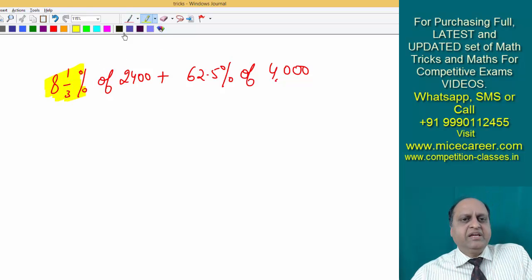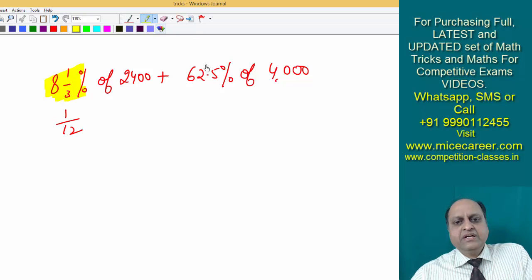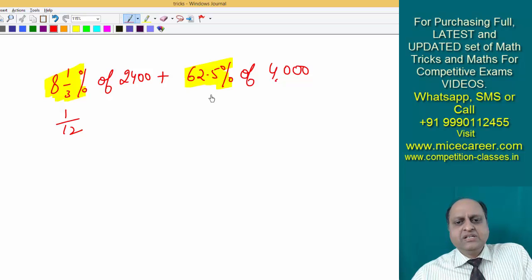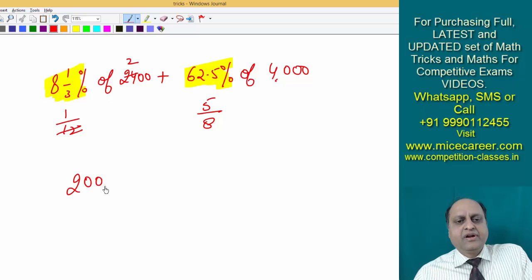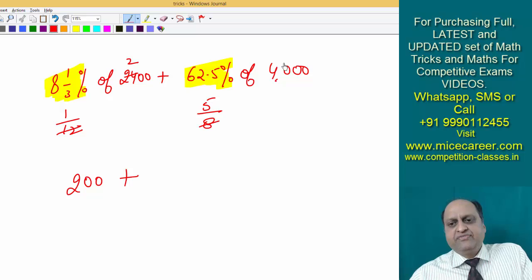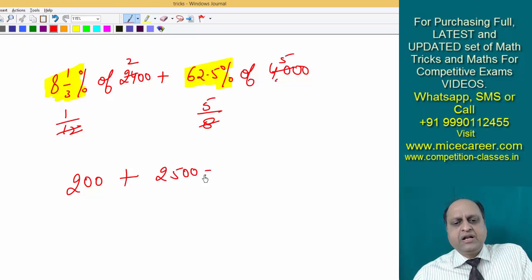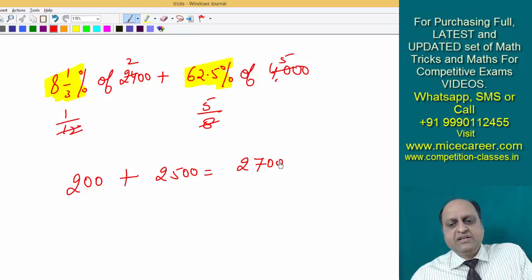8 one by three percent equals 1 by 12, and 62.5 percent equals 5 by 8. So 1 by 12 of 2400: 12 into 2 is 24, giving 200 for the first part. And for the second part, 5 by 8 of 4000: 8 into 5 is 40, giving 2500. So the final answer is 2700.